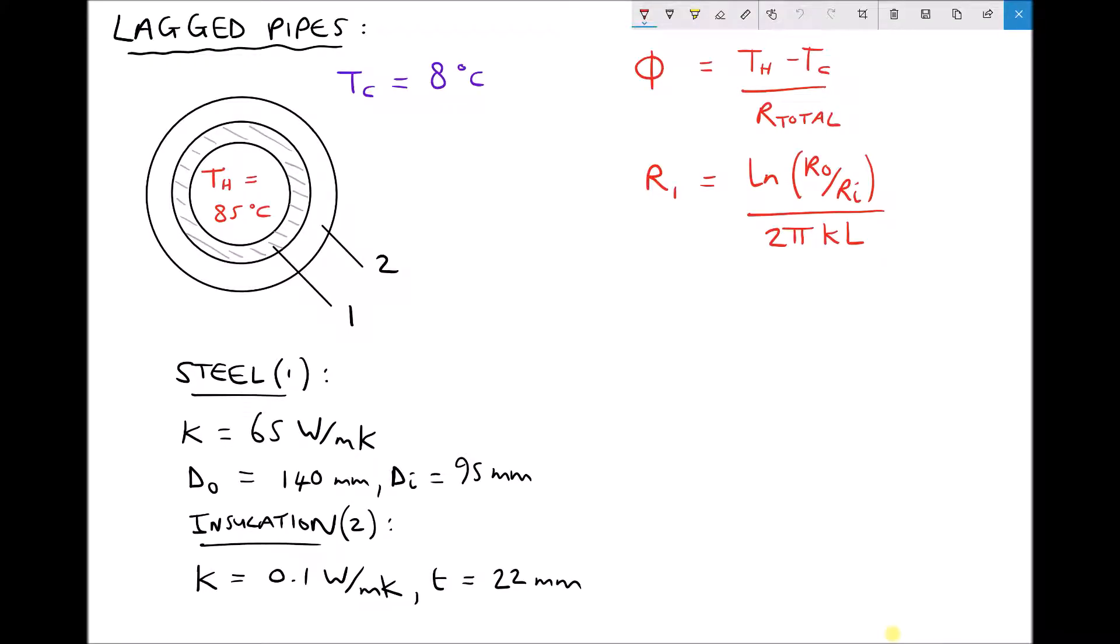In the previous video we looked at how to calculate rates of heat transfer through composite walls. And now we're going to extend that theory and apply it to lagged pipes. Pictured on the screen we have a lagged pipe made of steel. Around the outside of the steel pipe we have the lagging labeled here as number 2. Traveling through the center of the pipe we have a fluid at 85 degrees Celsius and the surrounding air is at 8 degrees Celsius.